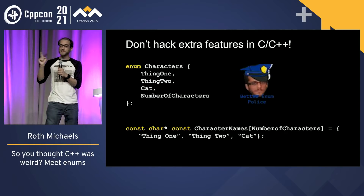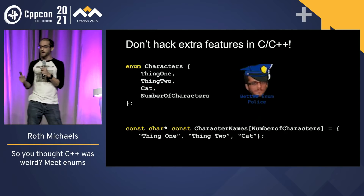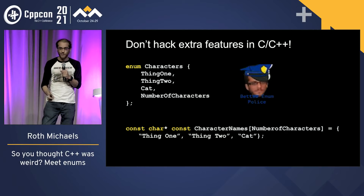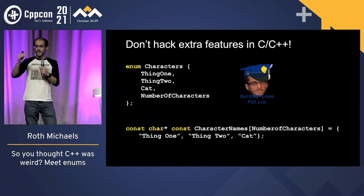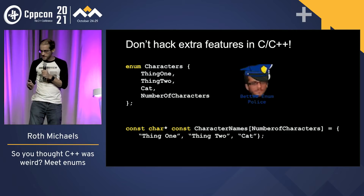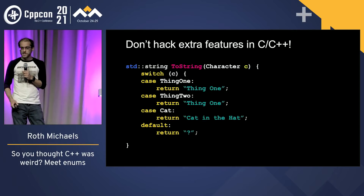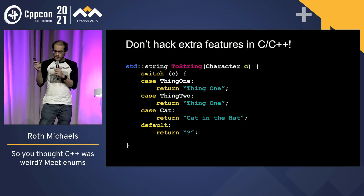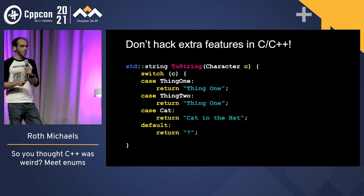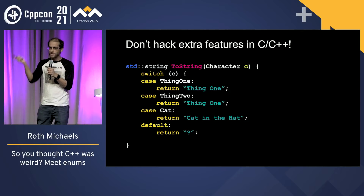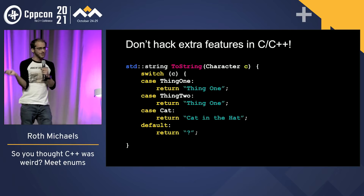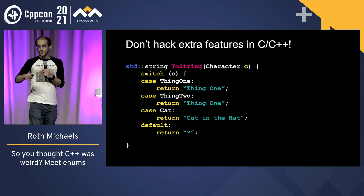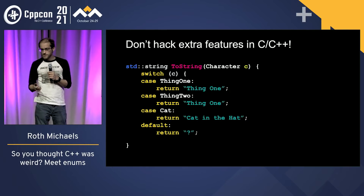In C++, you might be tempted to count your enums by putting a 'number_of_characters' sentinel at the end — for example, in Cat in the Hat characters you'd have thing_one, thing_two, cat, and number_of_characters. But there is no 'number of characters' in that book. When you write a switch case covering thing_one, thing_two, and cat, you're forced to add a default case just to make the compiler happy, returning a question mark. But this will make you sad if you later add another case. Please don't do this.